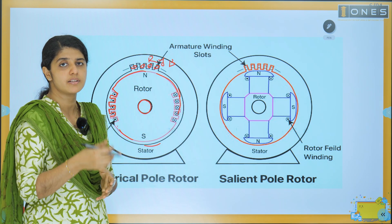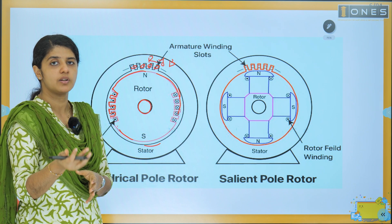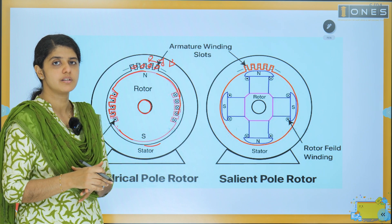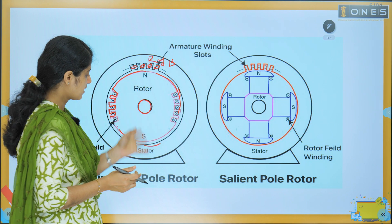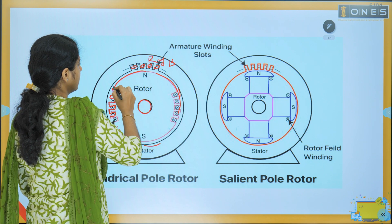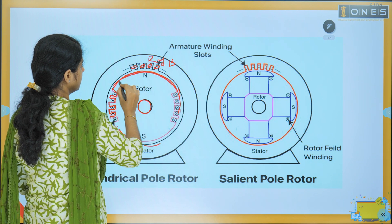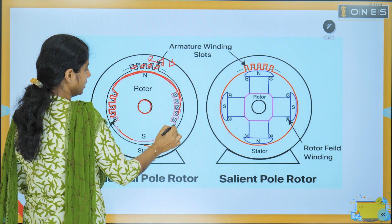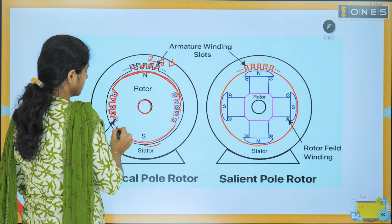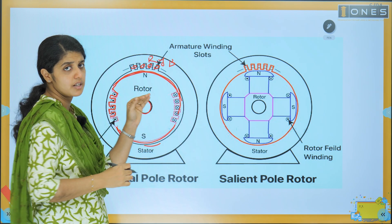As current flows, because of the direction of the current, it will develop the magnetic poles. This construction is a cylindrical pole. Because of this cylindrical pole, it has a different shape on the surface.